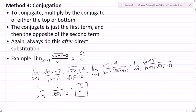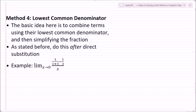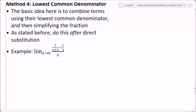Always do direct substitution first. Now let's look at the fourth method. If you can't factor and can't conjugate, you use what's called the lowest common denominator. The basic idea is to combine terms using their lowest common denominator, simplify the fraction, and again — do this after direct substitution. Let's take a look at an example where plugging in gives zero over zero.